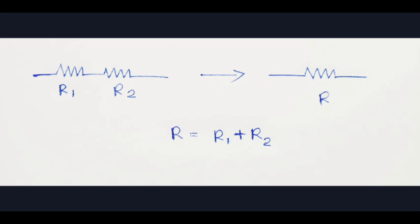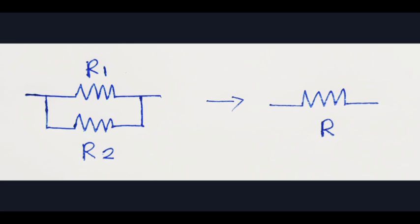We will add R1 plus R2. Now we will get the parallel connection. For a parallel connection, the effective resistance formula is: 1 by R is equal to 1 by R1 plus 1 by R2.